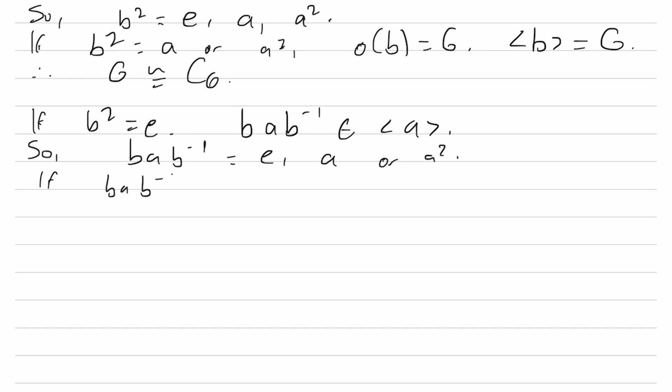If BAB inverse equals E, then let's multiply both sides by B on the right to get BA equals B. Now let's multiply by B inverse on the left on both sides. We're going to get A equals E. But that's a contradiction since the order of A is 3.